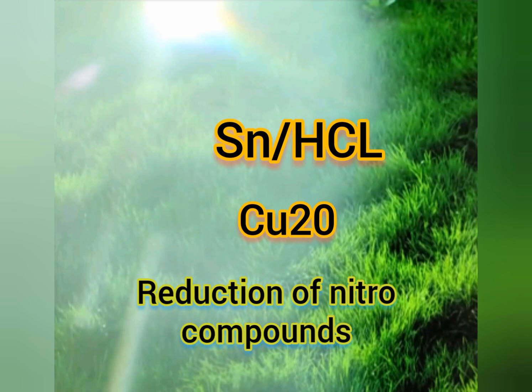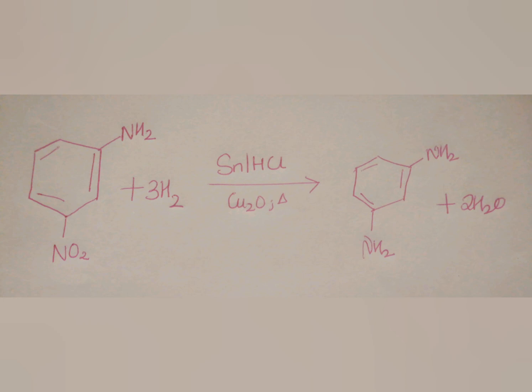Tin in HCl and copper oxide is used for conversion of nitro group into an amine group.